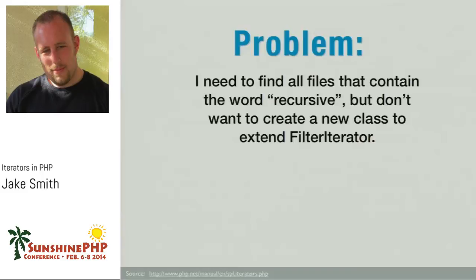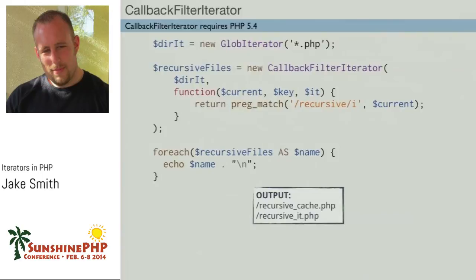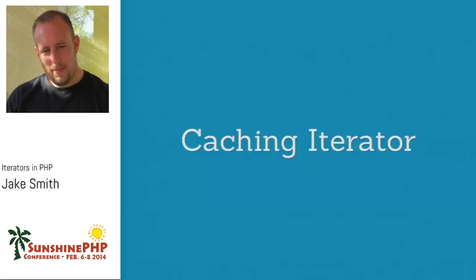For example, I need to find all files that contain the word 'recursive' but don't want to create a new class to extend. I have my GlobIterator for PHP files, and then my anonymous function — the first parameter is the current element, next is the key, and the third is the actual iterator. I'm checking whether the file contains the word 'recursive' using file_get_contents, and the two matching files came back from the directory listing.